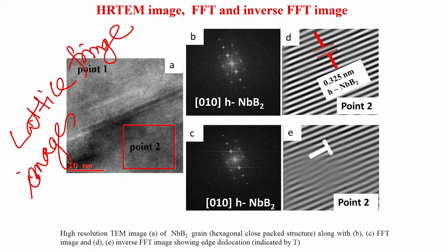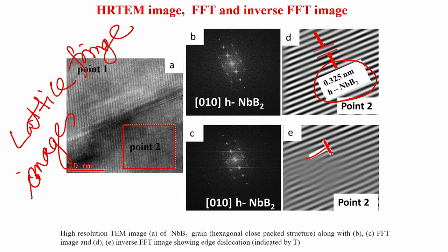In the bright field TEM images of niobium boride one can clearly see the lattice fringes. On the right hand side you see FFT and inverse FFT images, and from these FFT images one can find out the interplanar spacing. In the case of hexagonal niobium boride the interplanar spacing is 0.325 nanometers, and you will also see positive edge dislocations. You will also see planar defects — edge dislocations which are line defects — also present in these materials.